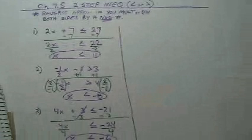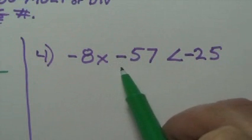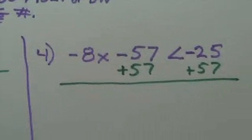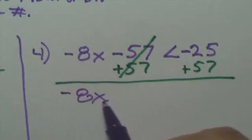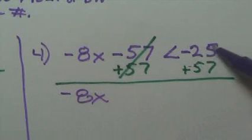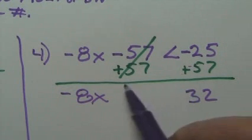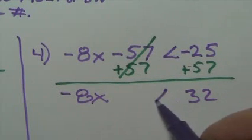We'll do one last example. I first want to get rid of the minus fifty-seven, so I will add fifty-seven. That leaves me with negative eight x, and fifty-seven minus twenty-five is thirty-two. I added fifty-seven — do I switch the arrow if I add fifty-seven to both sides? No, the arrow stays the same.